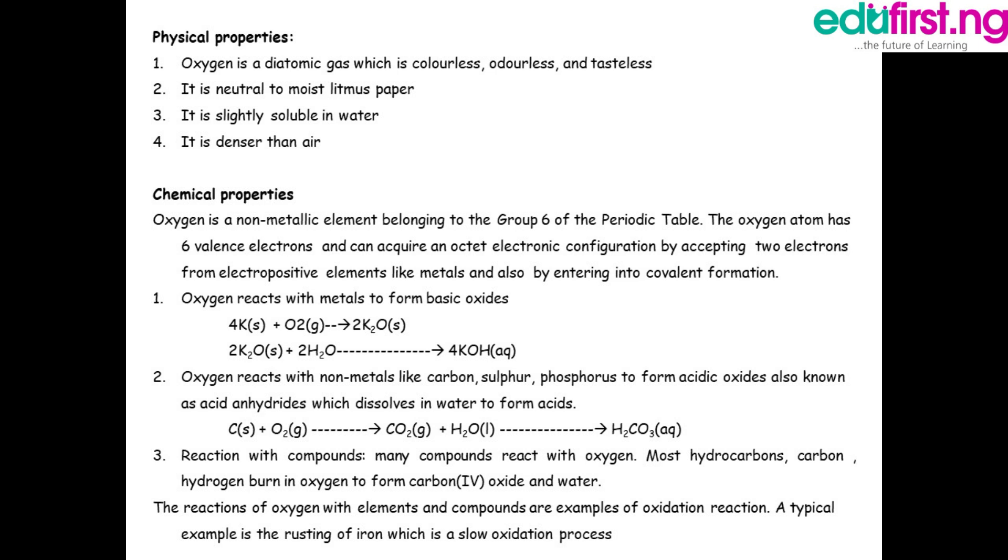Number one: Oxygen reacts with metals to form basic oxides. We have oxygen reacting with metals to form basic oxides which in turn react with excess water to form potassium hydroxide. Look at this example: we have four molecules of potassium reacting with oxygen. This gives us potassium oxide. This will further react if you subject the potassium oxide to more water, then we'll have potassium hydroxide.